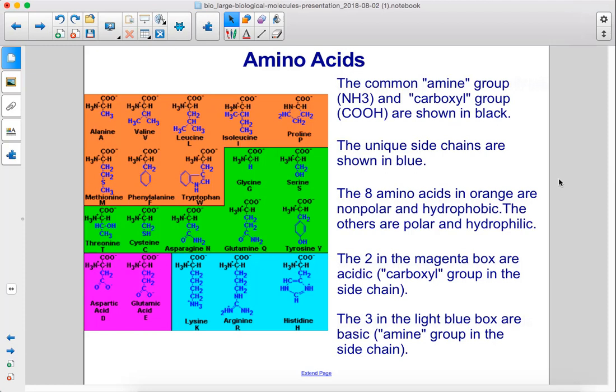The common amine group and carboxyl group are shown in black. The unique side chains are shown in blue. The eight amino acids in orange are nonpolar and hydrophobic. The others are polar and hydrophilic. The two in the magenta box are acidic, carboxyl group in the side chain. The three in the light blue box are basic, amine group in the side chain.